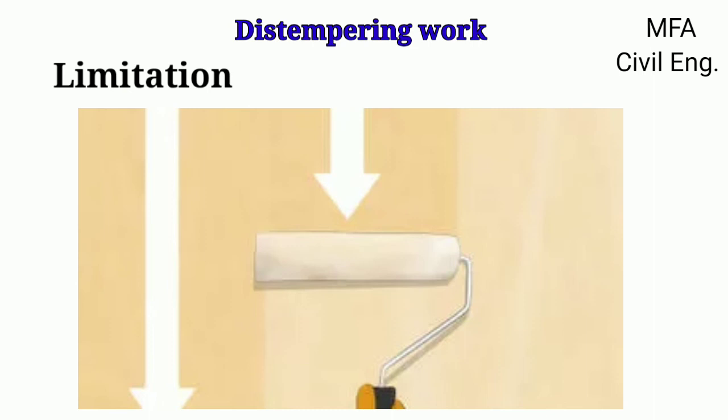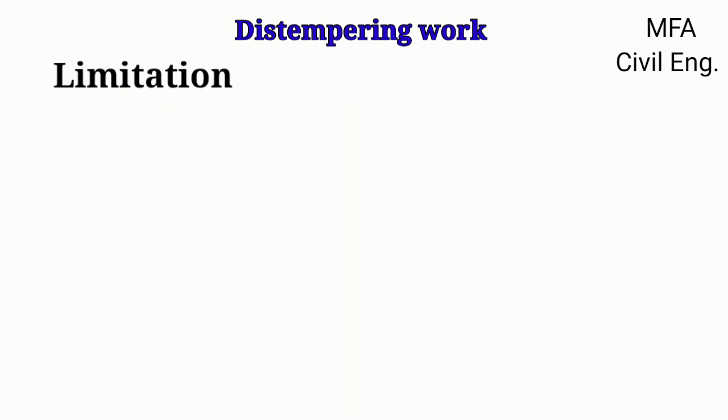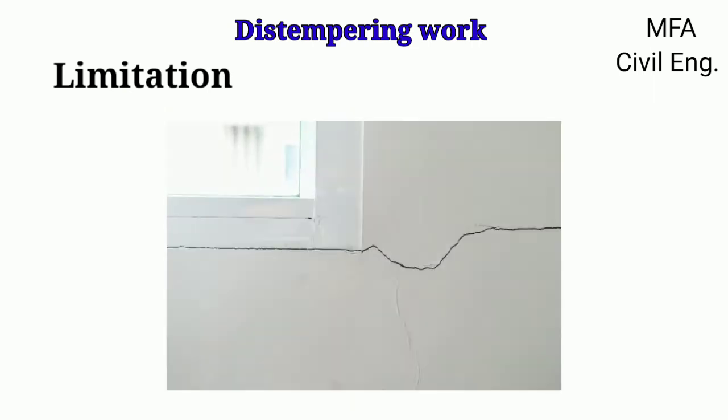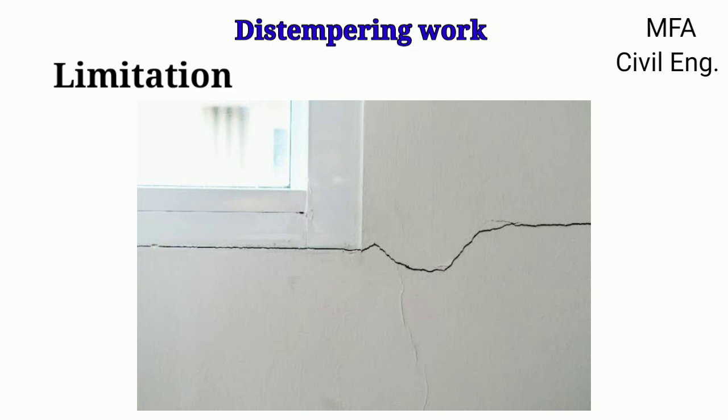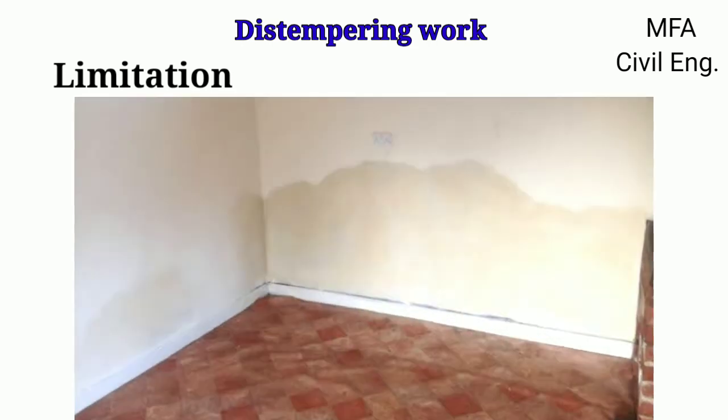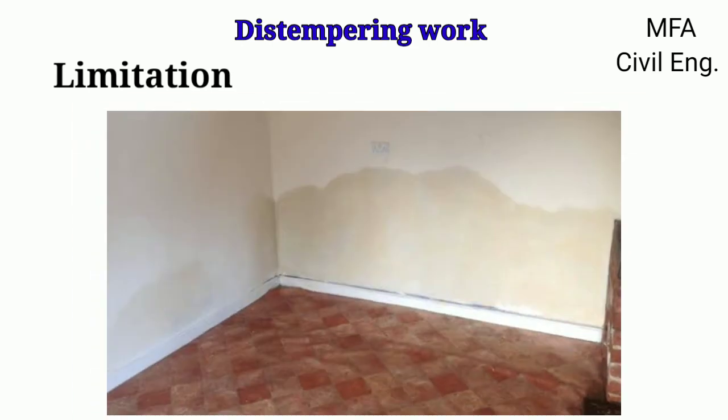Distemper has various limitations compared to paints. The coating of distemper is usually thicker and more brittle than water paint. If distemper is not applied uniformly, its film can shrink and crack. The film of distemper is porous and allows penetration of moisture through it. It is less durable than paint.